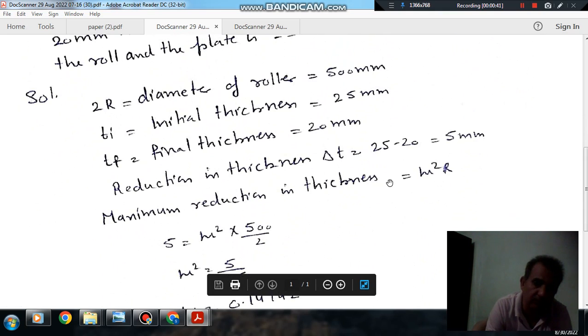So, maximum reduction - we know that maximum reduction is μ² × R, where μ is the coefficient of friction and R is 500 mm. The reduction in one pass is 5 mm.